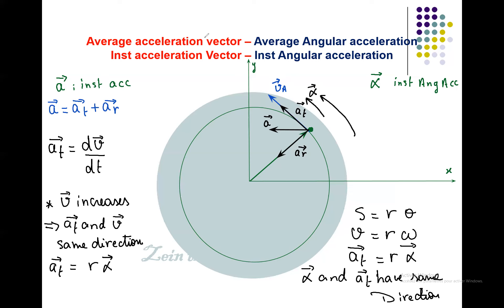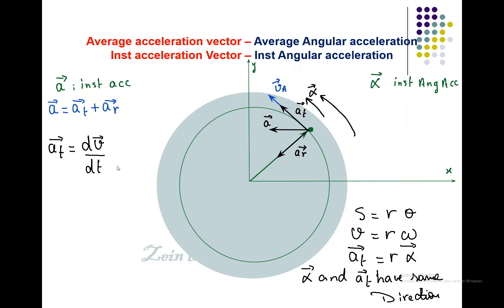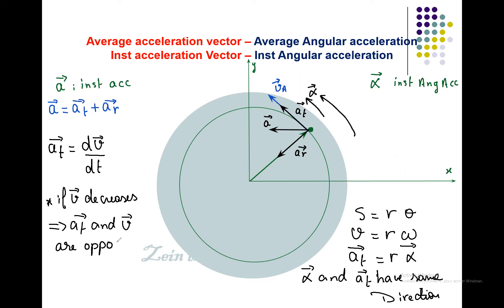In the second case, if v decreases, then a_tangential and v are in opposite directions — a_tangential will point in the opposite direction to v. And since alpha has the same direction as a_tangential, alpha also opposes v in this case.